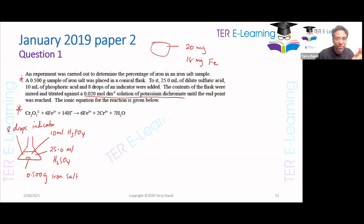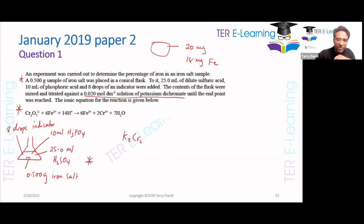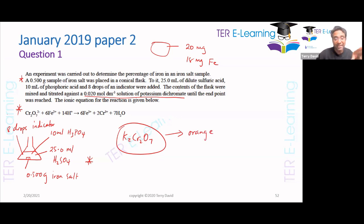There's a titration taking place between everything inside the conical flask versus potassium dichromate — K₂Cr₂O₇. That's the orange solution. So you're titrating this orange liquid with whatever is in that conical flask. That's all they told us so far.